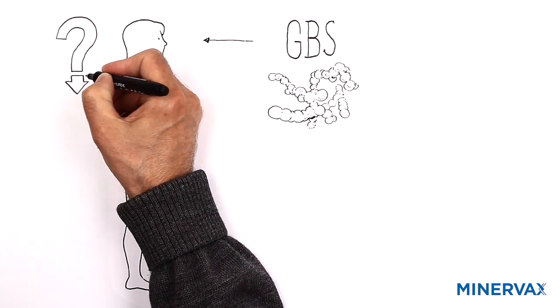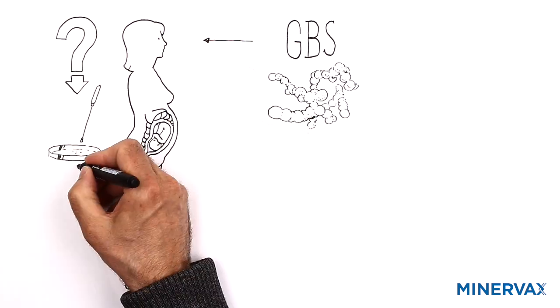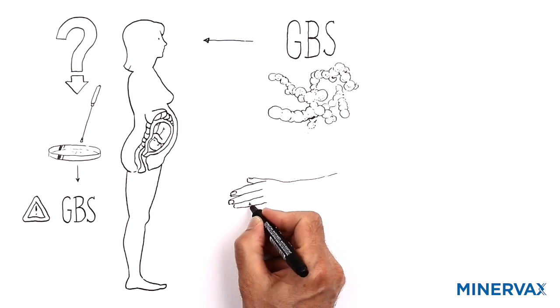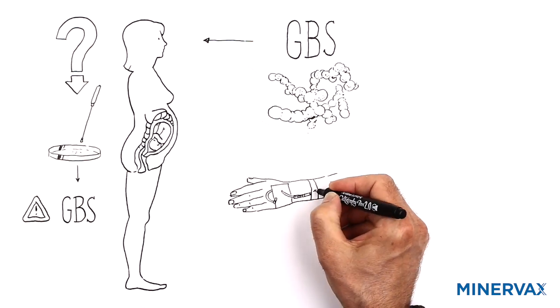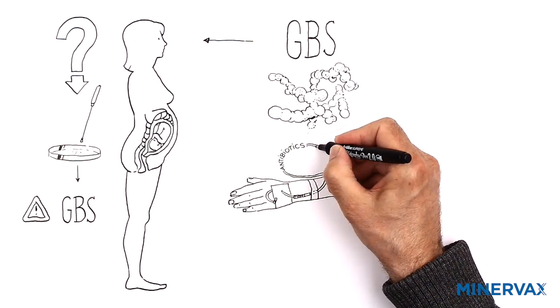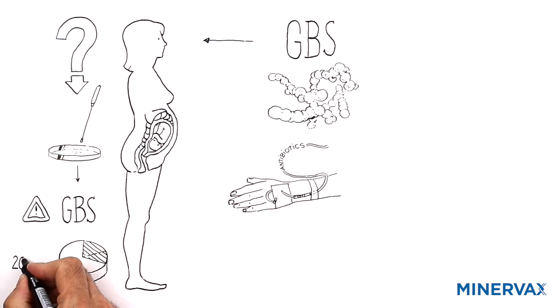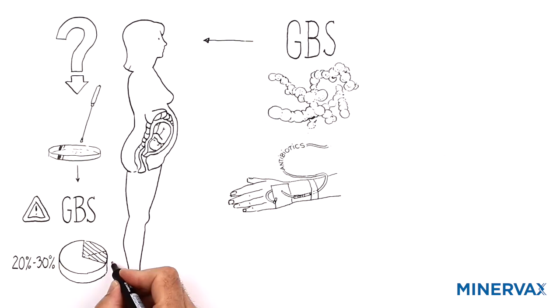Pregnant women may be screened for the presence of GBS, either routinely or based on risk factors, and if positive, they'll be given prophylactic antibiotics treatment during labor. Up to 30% of women in developed countries receive antibiotics during childbirth.